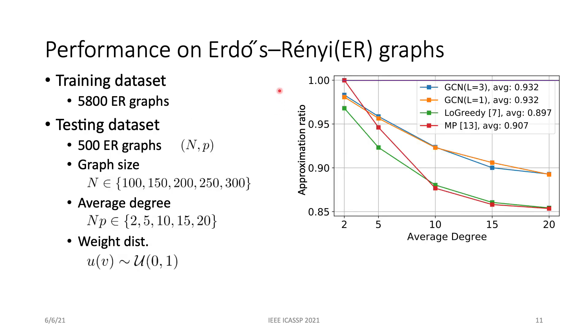Our first experiment is to test those heuristics on Erdős-Rényi graphs. The GCNs are trained on ER graphs and then the test set includes 500 ER graph instances. This figure shows approximation ratios of the tested heuristics along with the average degree of tested graphs. Here, the optimal is 1, found by a commercial solver.